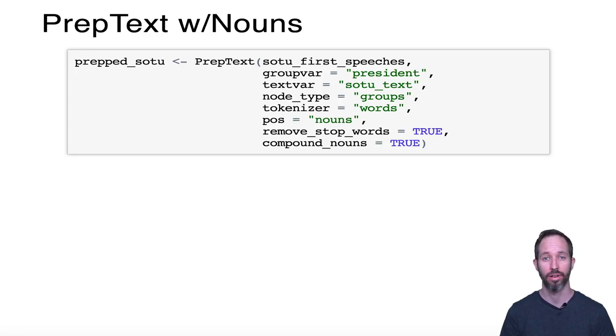So the first core function in the package is called prep_text. Prep_text reads in a data frame, and within that data frame we need to give the function a grouping variable—that's the author, in this case that variable is called president. We need to tell it where the text is; in this case that variable is called sotu_text. We need to tell it whether we want to do an author-based projection or a word-based projection—that's the node_type argument. If you want to do an author-based projection you should write 'groups'; if you want to do a word-based projection you should do 'words'. Next it gives us the option to tokenize by words or other tokens, and then this next argument, pos, stands for part of speech, allows you to specify which parts of speech you want to keep in the analysis. You can remove stop words, and you can choose whether or not to allow the part-of-speech tagger to pull out proper nouns—things like the United States of America, which would otherwise become United States of America.